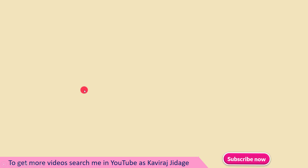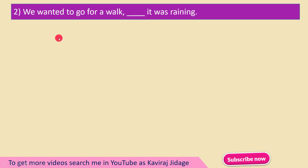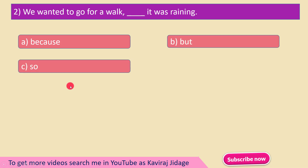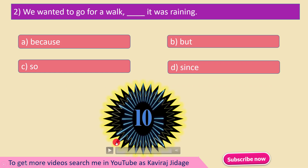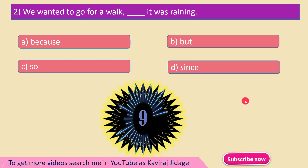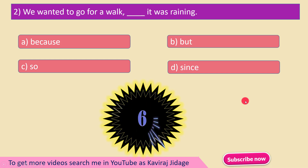Move to the second question. We wanted to go for a walk – it was raining. A) Because, B) But, C) So, D) Since. We wanted to go for a walk – it was raining.